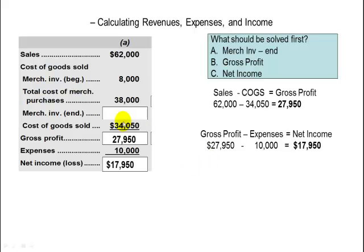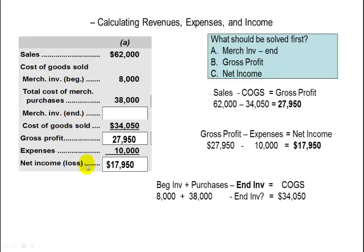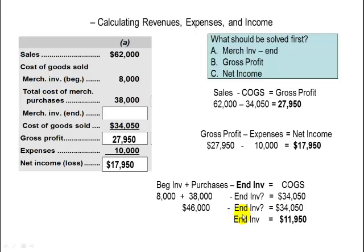Finally, the one that's a little more difficult is ending inventory. For ending inventory, we use: beginning inventory plus purchases minus ending inventory equals the cost of goods sold. We plug in what we know and combine all the pieces on the left side, giving us $46,000 minus ending inventory equals $34,050. The difference between $46,000 and $34,050 is the ending inventory, which should be $11,950. And we're finished.